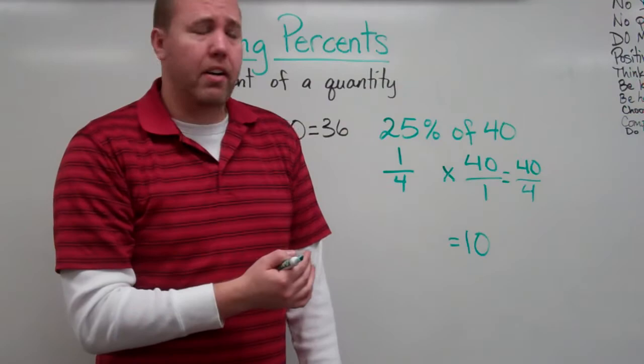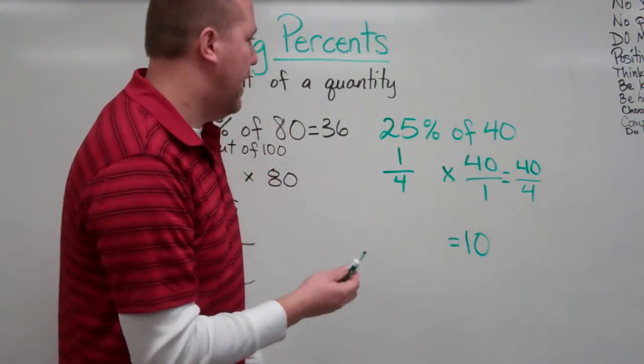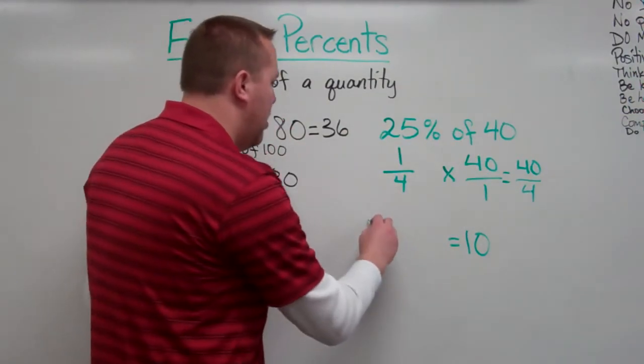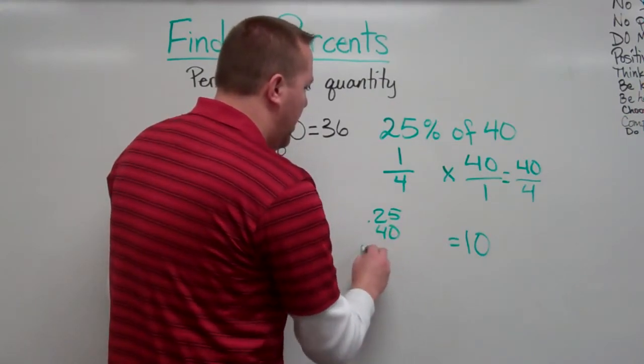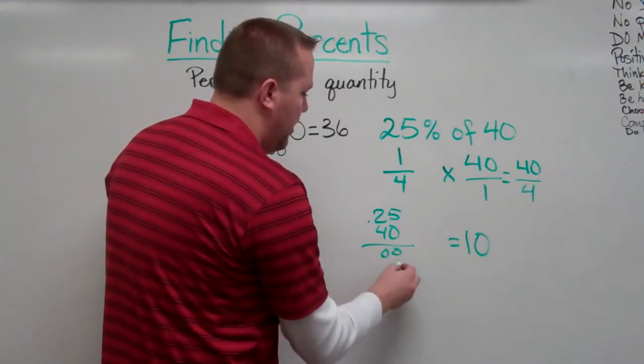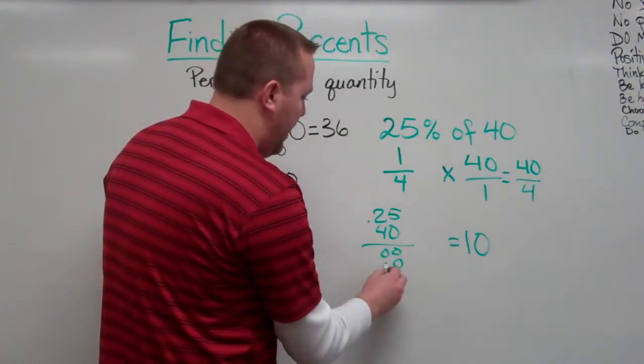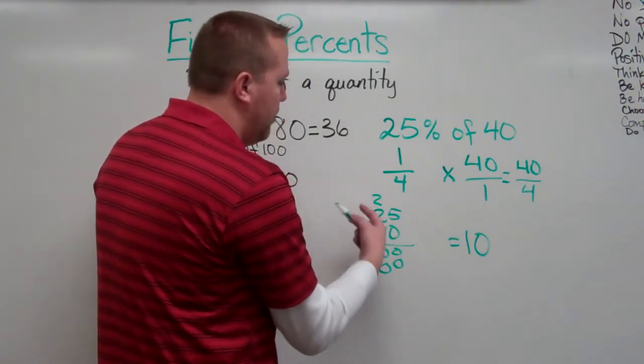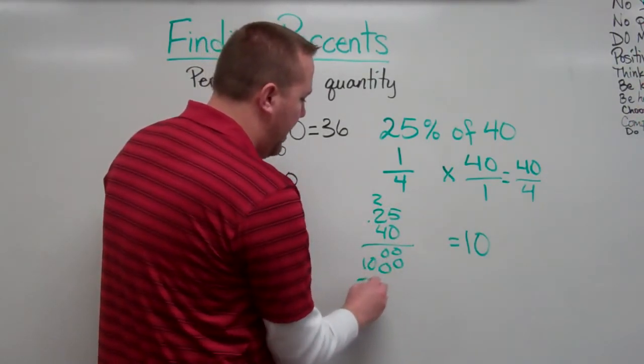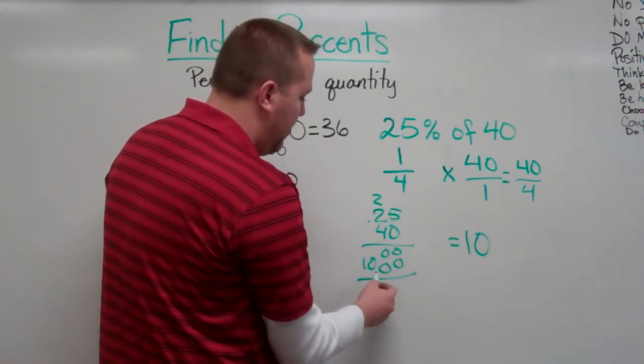I could also go about doing .25 times 40. Let's actually do that. .25 times 40. I know that's all going to be zeros. Put the zero down there. 4 times 5 is 20. 4 times 2 is 8. Plus 2 is 10. Two digits after the decimal in the answer.